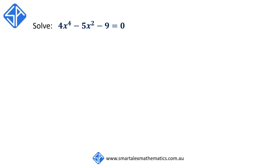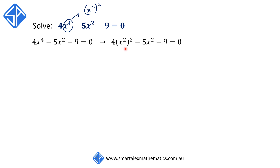Let's look at another similar example. This time we're going to solve 4x to the 4 minus 5x squared minus 9 equals 0. This is again a degree 4 equation, but we can reduce it to a quadratic by recognizing that x to the 4 can be rewritten as (x squared) squared using the index law. We introduce the variable u and let u equal x squared, replacing all x squared terms to get the quadratic equation 4u squared minus 5u minus 9 equals 0. This is slightly different because we now have a non-monic quadratic.